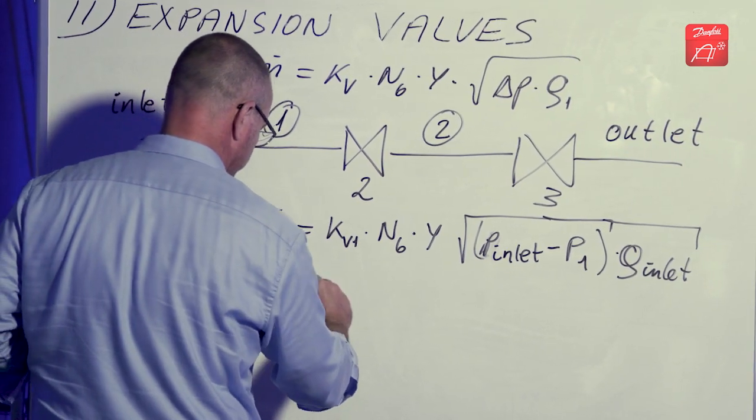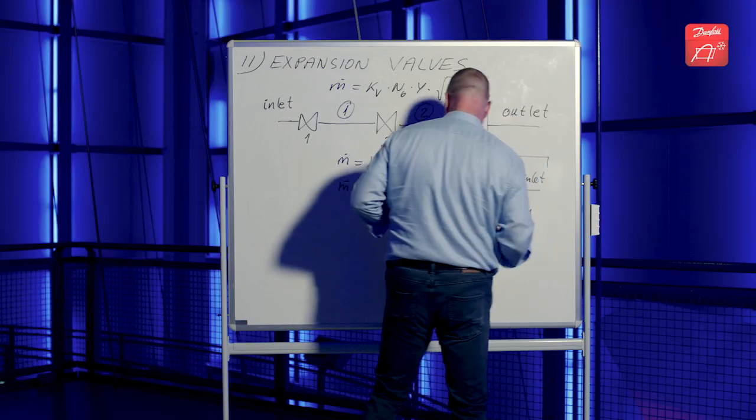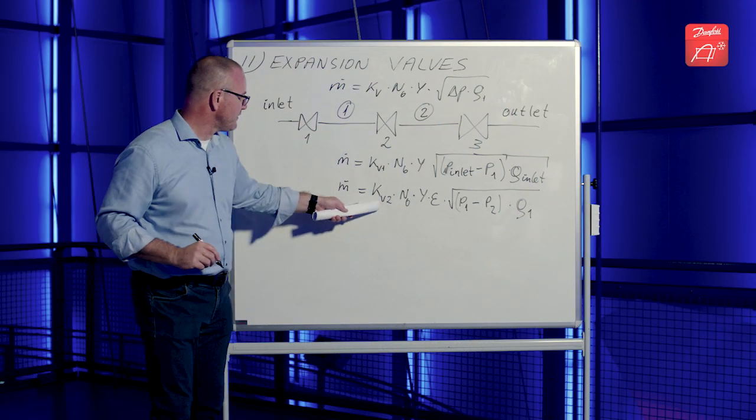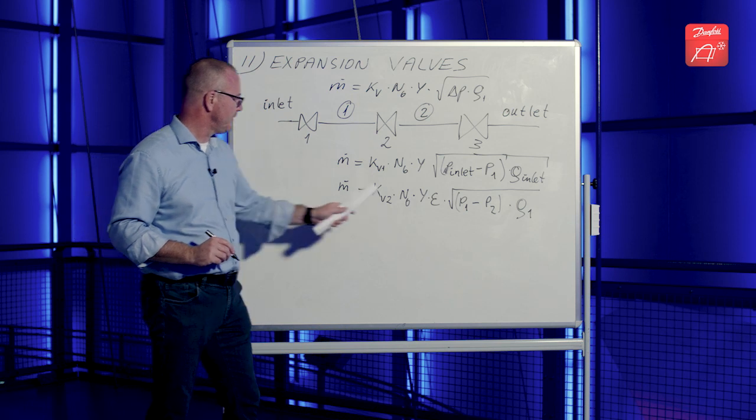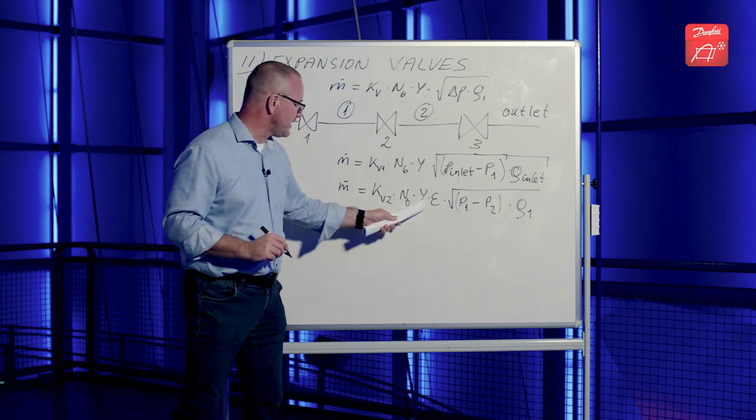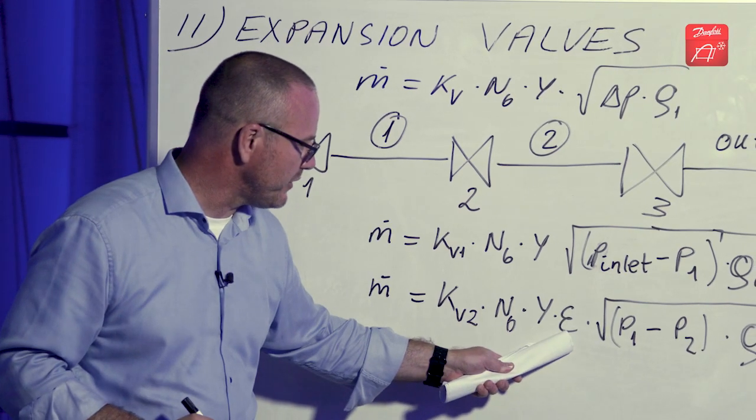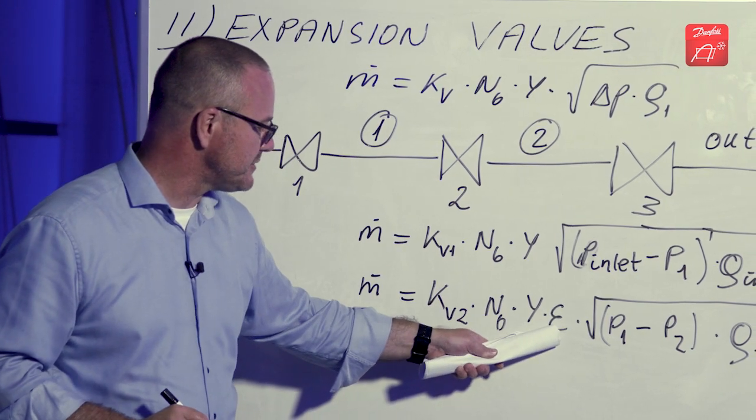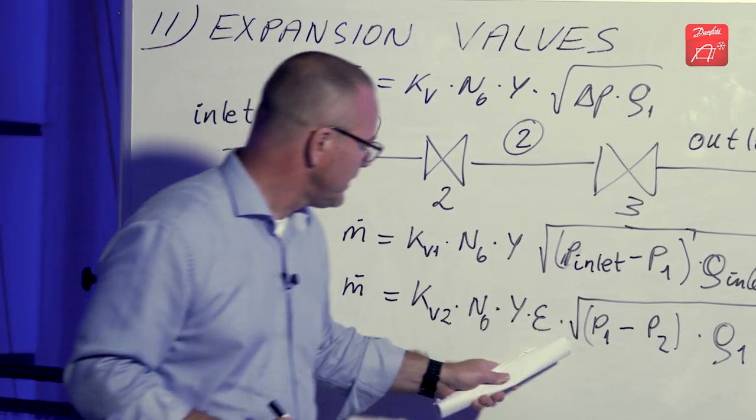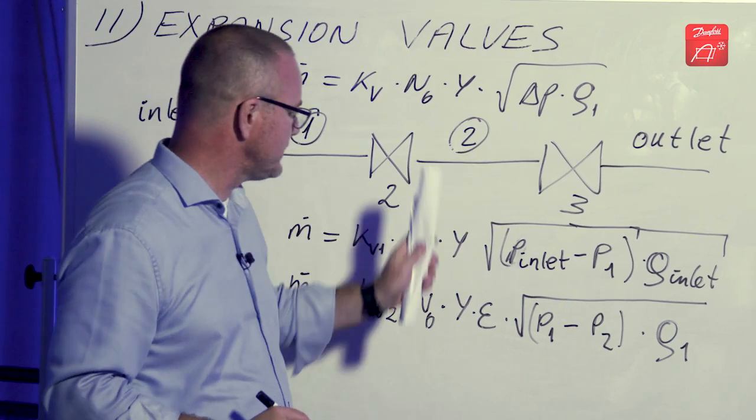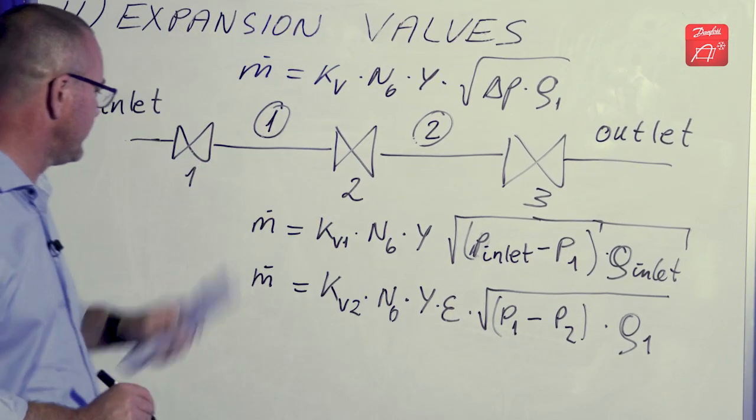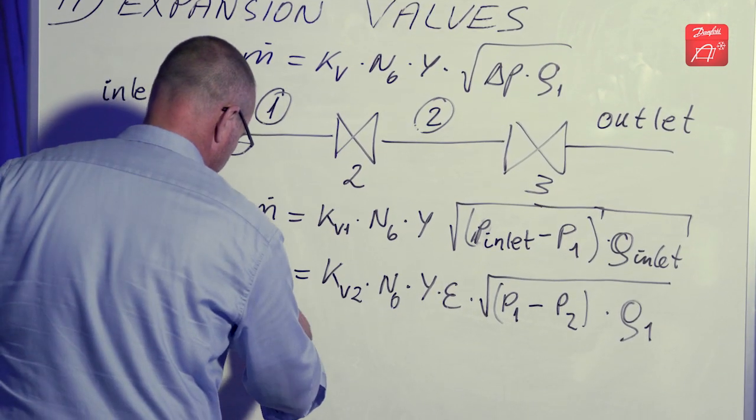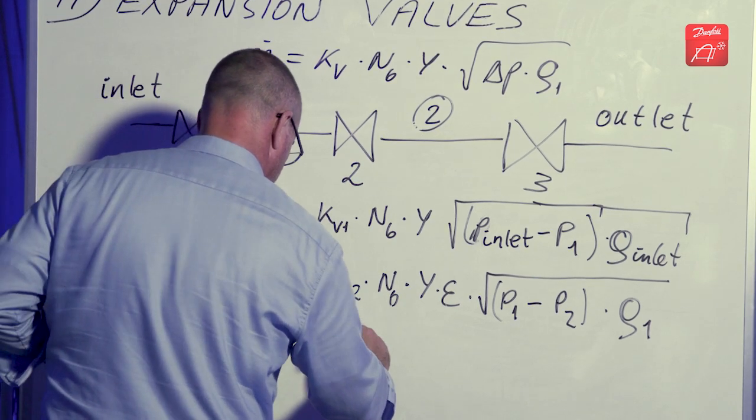For the second valve, we have the KV value for the second valve. We have the constant, net expansion factor. Now, then we have a factor called epsilon and I'll return to this. Then we have the pressure difference and the density at the inlet. And now pretty much you know how this will go.